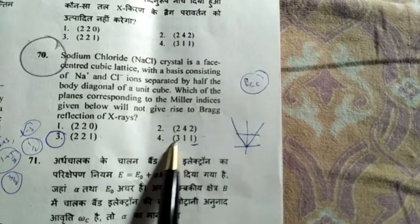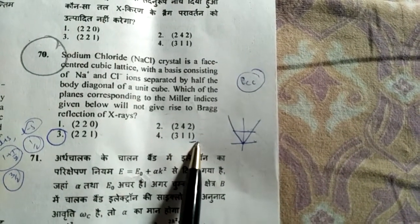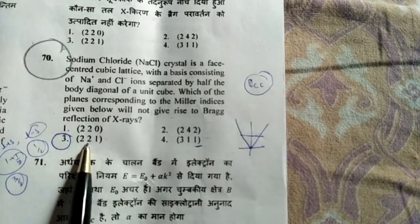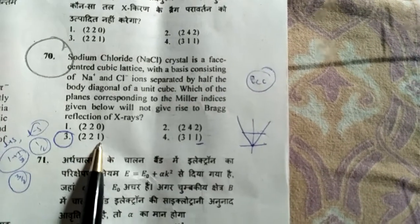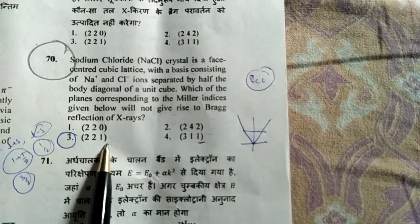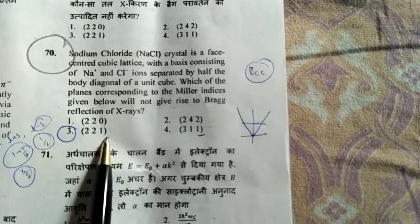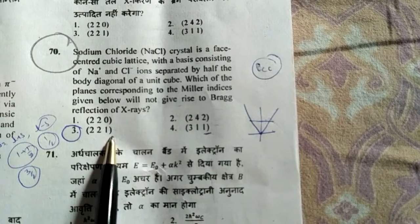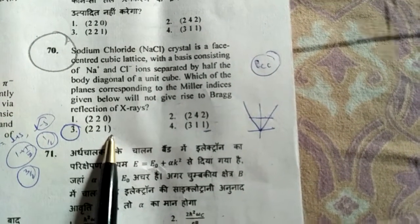2, 4, 2 is even. 3, 1, 1 is fully odd. So we have 2, 2, 1 which is a mixed plane. Therefore, this plane will not be present and will not follow Bragg's reflection law. So the 70th question's answer is option 3.